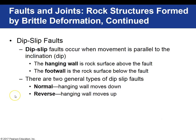We are going to look at dip-slip faults, where the movement is parallel to the dip. There is a hanging wall — that is the wall above the fault — and the foot wall is the rock surface below the fault. We will look at two types of dip-slip faults: normal and reverse. It is the relative motion between the hanging wall and foot wall that determines whether you have a normal or reverse fault.